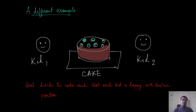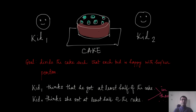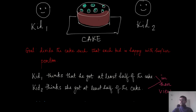Let us now consider a different example. Suppose a mother wants to divide a cake among two kids, kid one and kid two. The goal of dividing this cake is such that each of these kids is happy with his or her portion. It should not happen that after the division is done, one of the kids complains to the mother that he or she got a smaller piece. With that objective in mind, we can make it a little more formal: what is the meaning of so-called fair division?